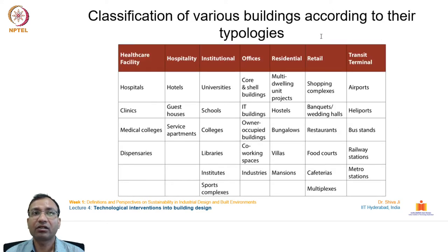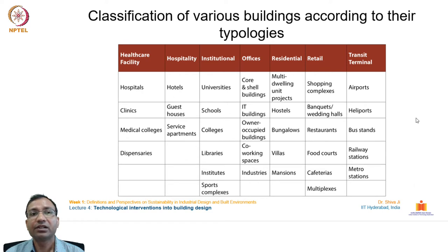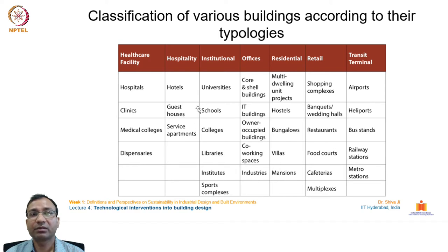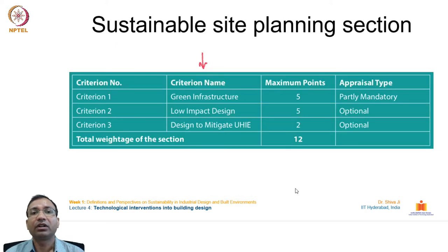Buildings are classified by typology: healthcare (hospitals, clinics, medical colleges, dispensaries), hospitality (hotels, guest houses, service apartments), institutional (universities, schools, colleges, libraries, sports complexes), offices, residential, retail, and transit terminals. These are the building typologies currently rated under the GRIHA framework.